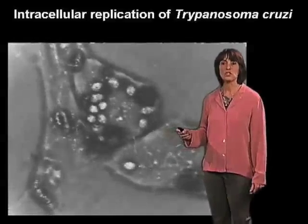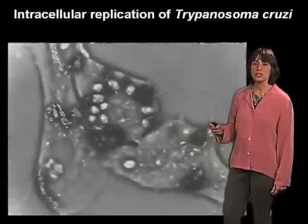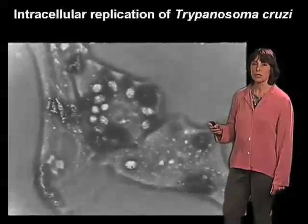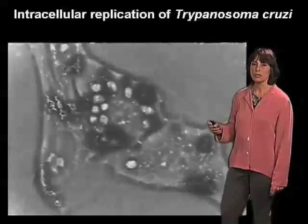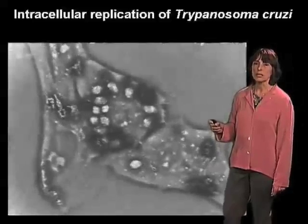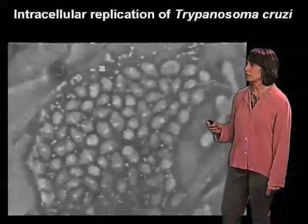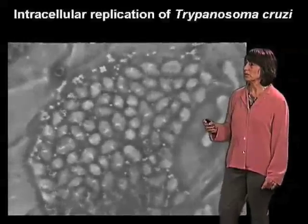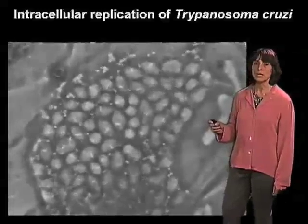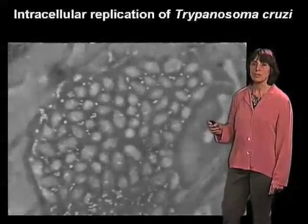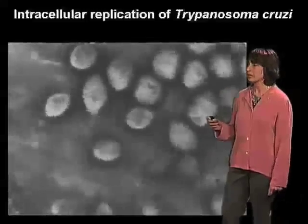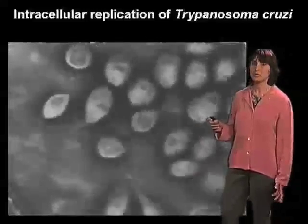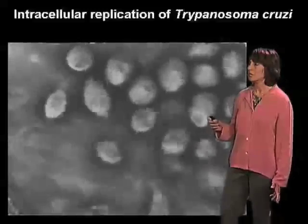This was Jim Dvorak at the NIH in the 70s who really worked out clearly the details of this intracellular cycle. What he learned is that they go through nine successive divisions, so each parasite that enters the cell actually originates around 500 parasites.